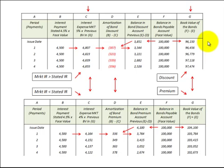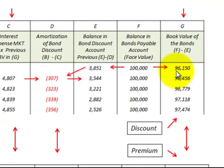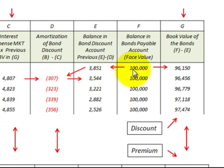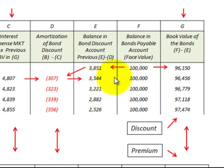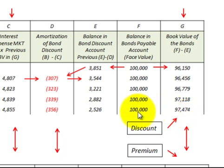Let's look at how we amortize the discount or premium on a bond. In the first case, we purchase a bond for $96,150 and its face value is $100,000. We use a bond discount account — a contra account — where we subtract $3,851 from the $100,000, showing a book value of $96,150. Each period we reduce this discount amount, so the carrying value of the bond increases, until the last period where the book value should equal the $100,000 face value.